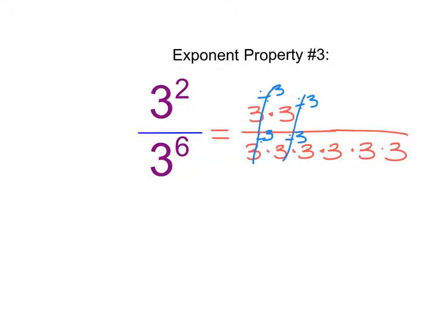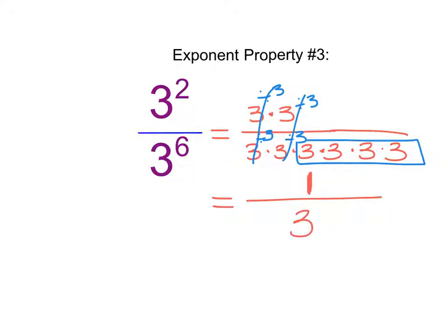What I find is that eventually one side of the fraction is going to run out of that number. In this case, our numerator has run out of 3's. So once I've divided all of those 3's out, I'm left with just a 1 in my numerator. And in my denominator, I notice I have 4 3's left, which I can represent as 3 to the power of 4.